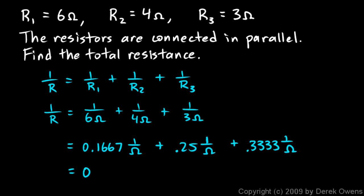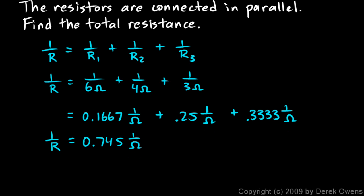We add all those up and that gives us 0.745 one over ohms. Now what we just found here was 1 over R. 1 over R is 0.745 one over ohms, so R is going to be the reciprocal of this: 1 over 0.745 one over ohms. And when we take the reciprocal of 0.745, we get 1.33, and the reciprocal of one over omega is just omega, so 1.33 ohms. We get the same answer.